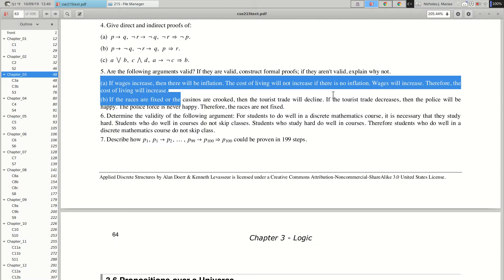Cost of living will not increase if there is no inflation. This is an if-then that's written backwards. This is saying if there is no inflation, the cost of living will not increase. So if there's no inflation, then there's no cost of living increase. And then it says wages will increase, so we're told W.